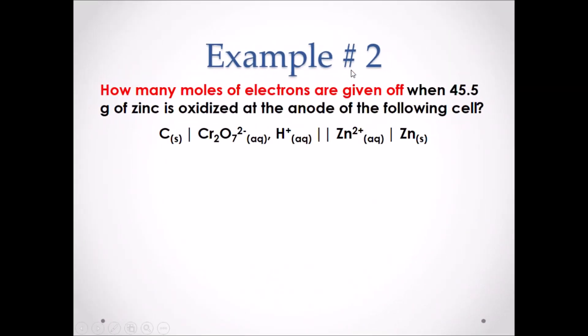Example number two: how many moles of electrons are given off when 45.5 grams of zinc is oxidized at the anode of the following cell? Pause the video and attempt this example.